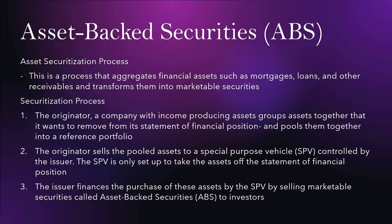Next we're going to look at asset-backed securities. The process aggregates financial assets such as mortgages, loans, and other receivables and transforms them into a marketable security in three steps. First, the originator — a company with income-producing assets — groups assets it wants to remove from its statement of financial position and pools them into a reference portfolio. The originator then sells the pooled assets to a special purpose vehicle controlled by the issuer, which finances the purchase by selling marketable securities called asset-backed securities.